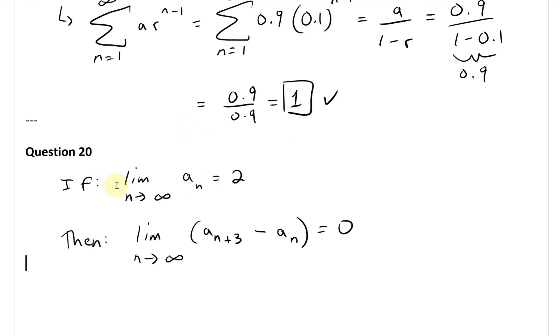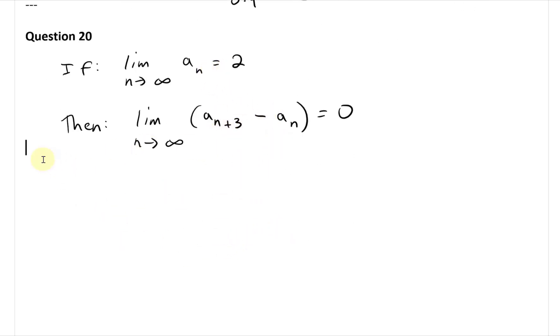And this is in fact true, because if you look at this limit as goes to 2, then it doesn't matter what this n plus 3 is, it's also going to infinity, so it's going to be also 2, and then you subtract the limits equals to 0.